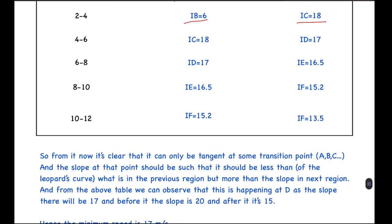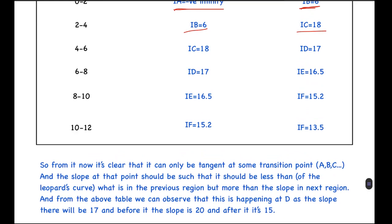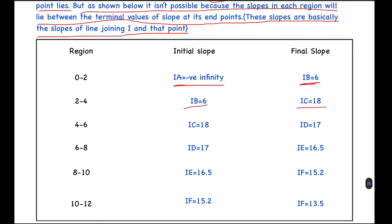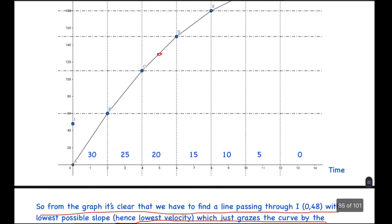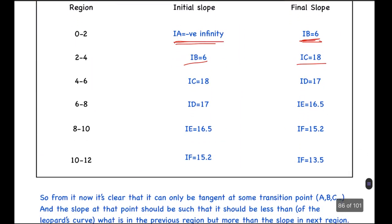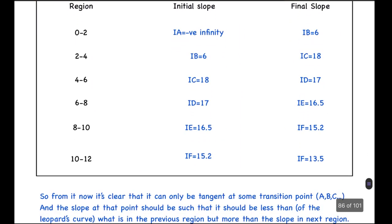So from now it's clear that it can only be tangent at some transition point. So basically, here I said that it is never equal to any integral value. It is varying from minus infinity to 6 and attaining the value of zero, but that value of zero does not match with this value in this region. So it cannot be tangent at some intermediate point.